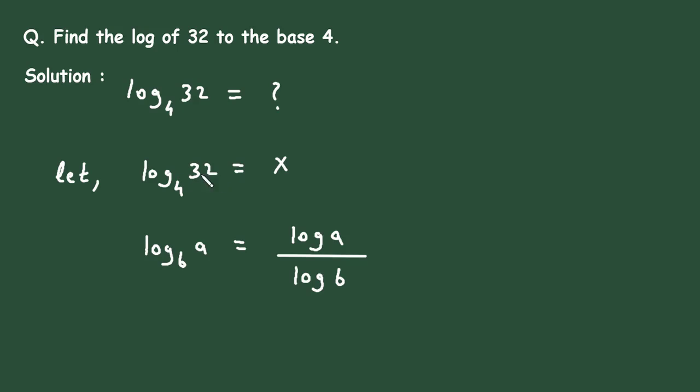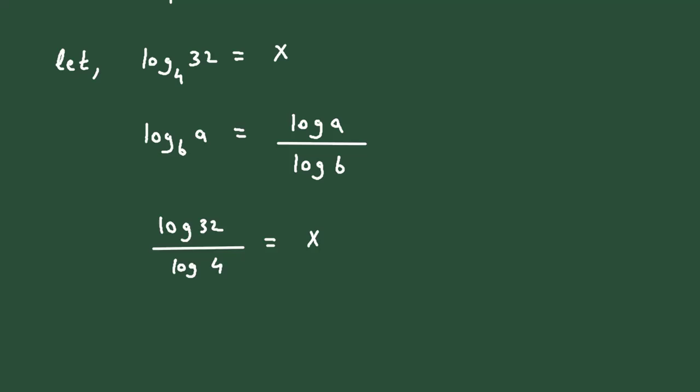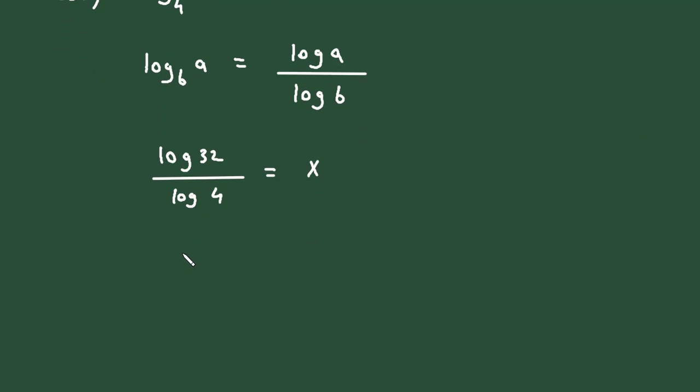We can apply this formula. So log 32 divided by log 4 equals x. We can rearrange this to get log 32 equals x times log 4.